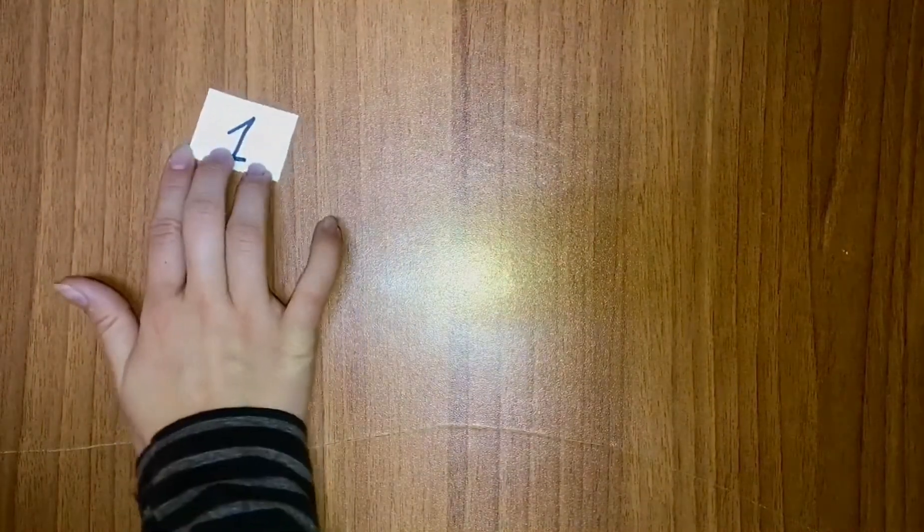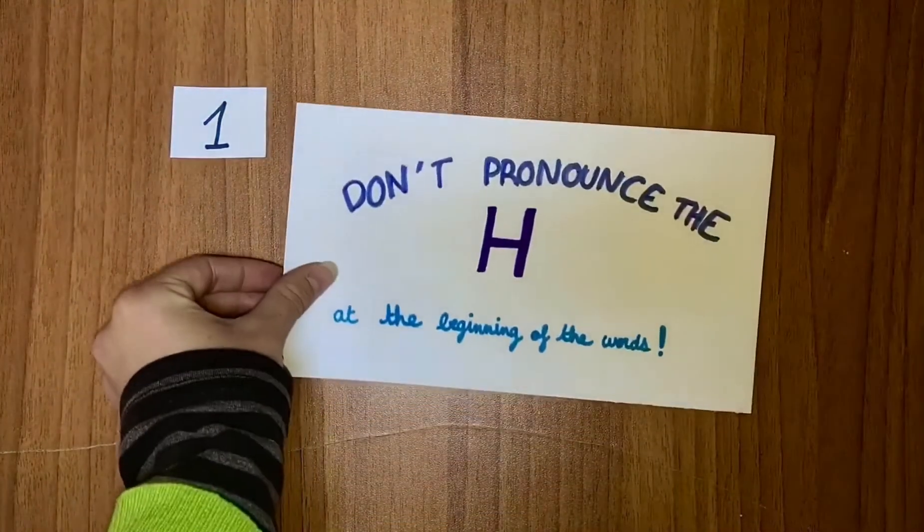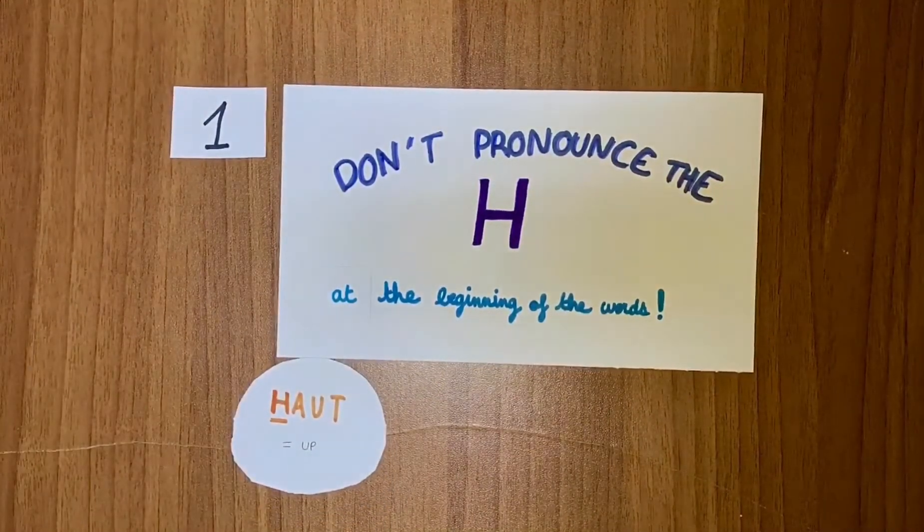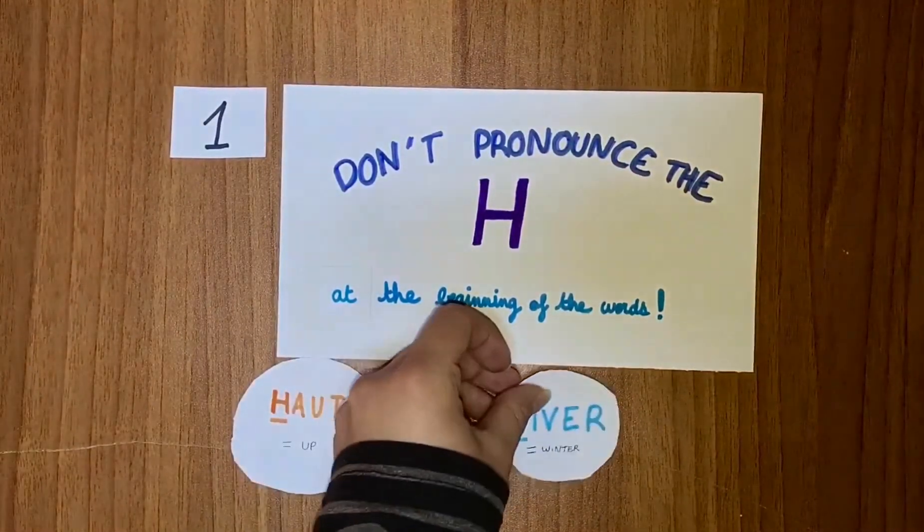First of all, the H at the beginning of words is always mute, not like in English. You will say 'haut,' that means up, and not 'haut.' Or 'hiver,' that means winter, and not 'hiver.'